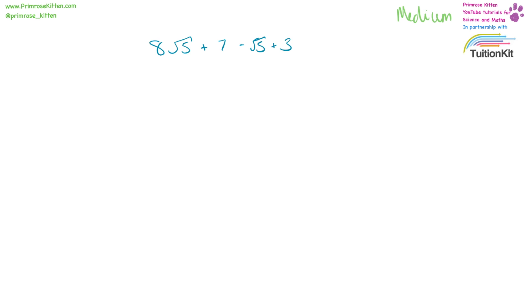8 square root 5 plus 7 minus square root 5 plus 3. 8 square root 5 minus square root 5 is 7 square root 5, and plus 7 plus 3 is plus 10. So the answer is 7 square root 5 plus 10.